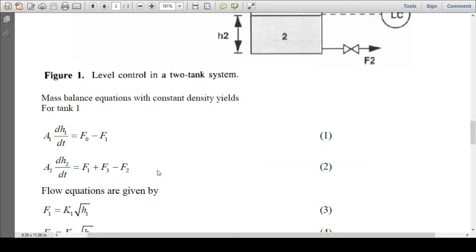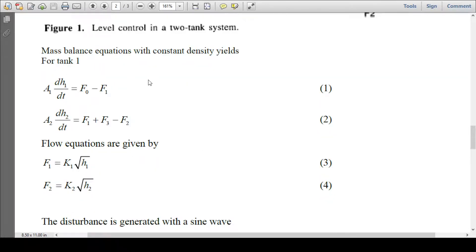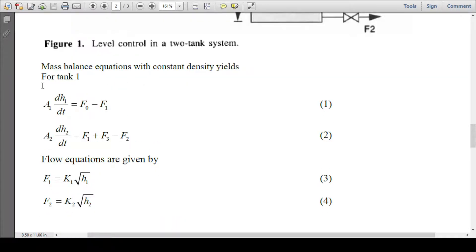If we write mass balance equations for constant density system, for tank 1 it would be: A1 dH1/dt = F0 - F1. Same thing for tank 2: A2 dH2/dt = F1 + F3. These are the two inlet flow rates minus outlet flow rate F2.